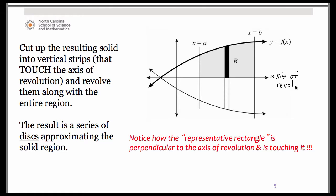Now one thing to notice about our representative rectangle, because this is going to lead to two characteristics of a disk method problem: notice that representative rectangle is perpendicular to the axis of revolution and is also touching it.